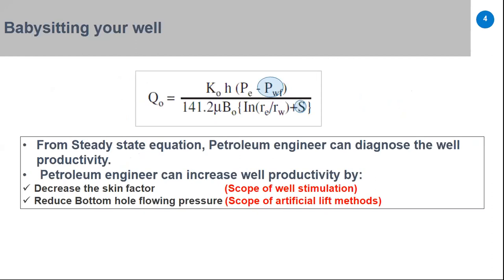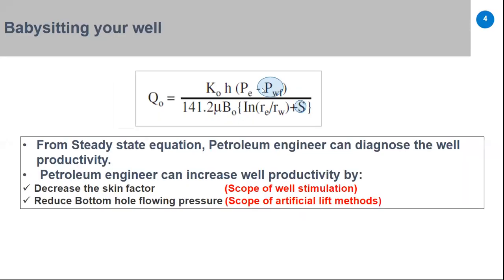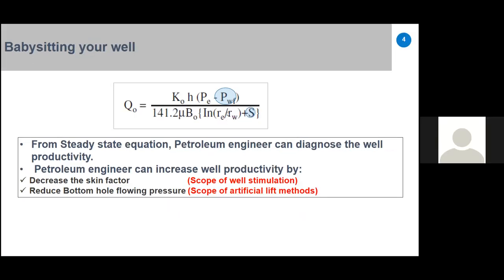The concept of babysitting UOL means to diagnose the problem of your well and figure out how to solve it. As petroleum engineers, we use the productivity index equation: production flow rate equals permeability multiplied by net pay thickness, multiplied by drawdown (average reservoir pressure minus bottom-hole flowing pressure), divided by oil viscosity and initial formation volume factor, multiplied by ln(RE/RW), plus skin.